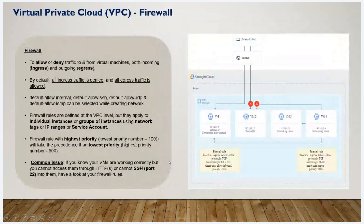Next is the firewall. If we create a new network, we need to define how the network will allow traffic. When we create a network, a firewall is created. We can configure it to allow or deny traffic — it controls all traffic on the private network.